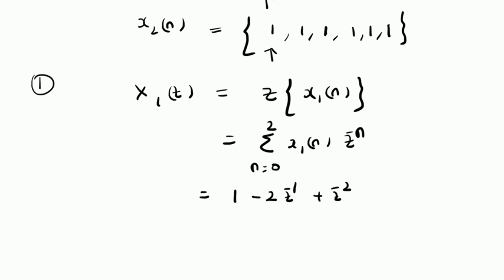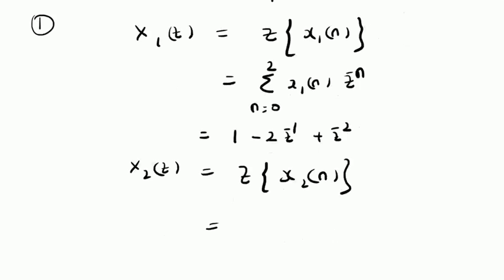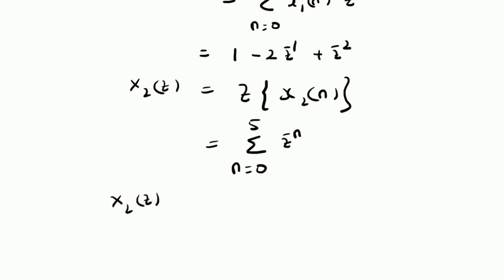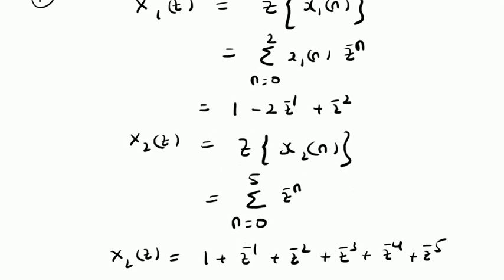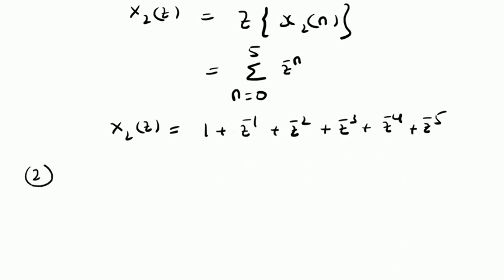Similarly, we find X2(z), the Z-transform of x2[n], which equals the summation from n=0 to 5 of z^(-n), since x2[n]=1 over this interval. So X2(z) = 1 + z^(-1) + z^(-2) + z^(-3) + z^(-4) + z^(-5). We have now completed step one.